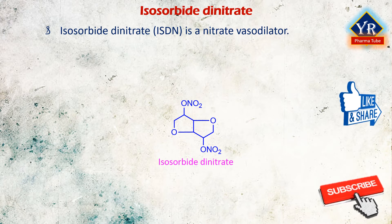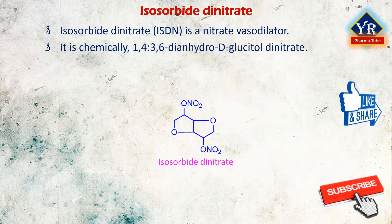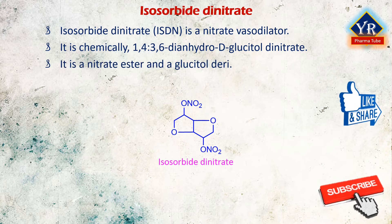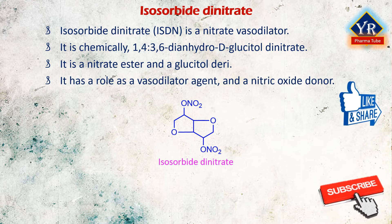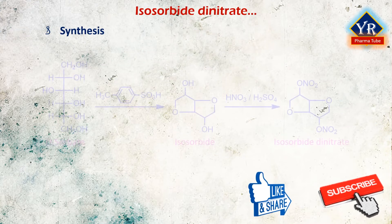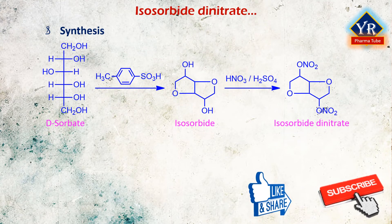The second drug is isosorbide dinitrate. Isosorbide dinitrate, abbreviated ISDN, is a nitrate vasodilator. It is chemically 1,4:3,6-dianhydro-D-glucitol dinitrate. The physiologic effect of isosorbide is by means of vasodilation. It is a nitrate ester and a glucitol derivative. It has a role as a vasodilator agent and a nitric oxide donor.